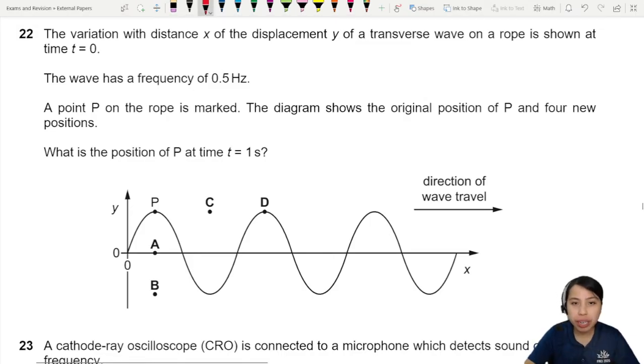Whenever there's two graphs you gotta know which is which. So distance is x, displacement is y. Be careful.